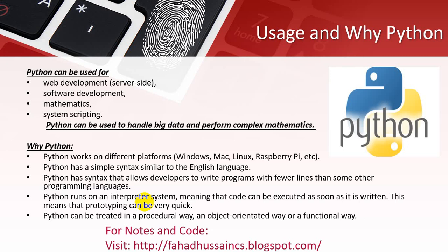Why Python? Python works on different platforms — Windows, Raspberry Pi, Linux, Mac, and so on. The syntax is very easy, using English-related phrases and words, and Python allows developers to write programs with fewer lines than other programming languages. Python runs on an interpreted system, meaning the code will be executed as soon as it is written.